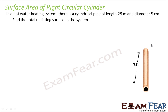5 centimeters is nothing but 5/100 meters. If we want the radius, we divide further by 2, that is 5/200 meters. This is the radius. I always take radius as a convention. We have to find the total radiating surface of the system, assuming the width is almost negligible — it is made of a very thin sheet.